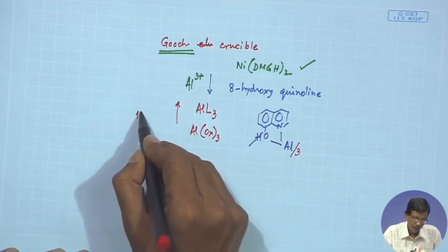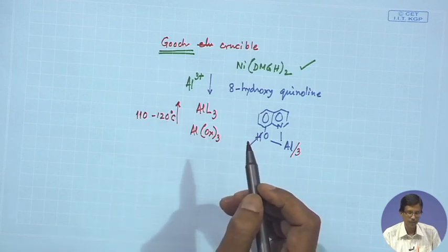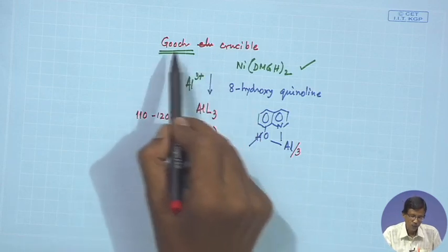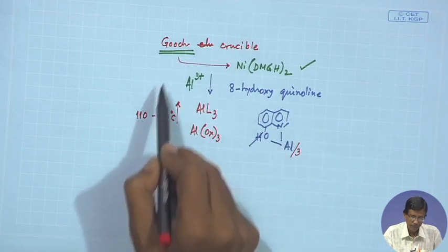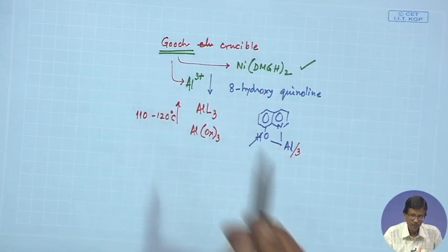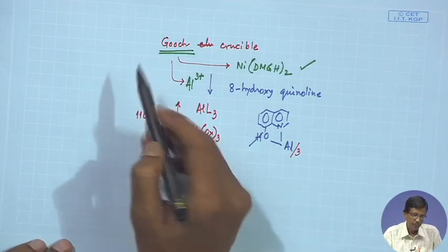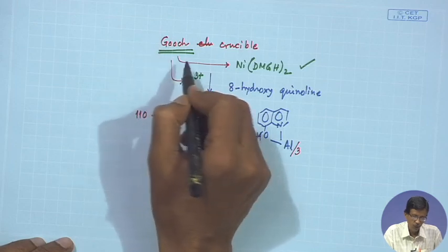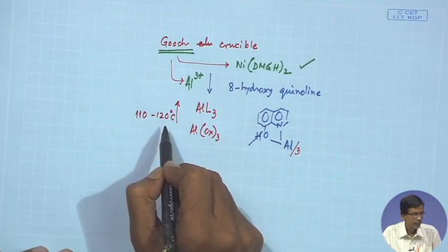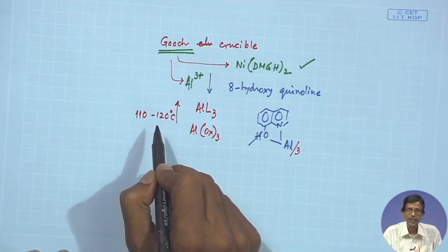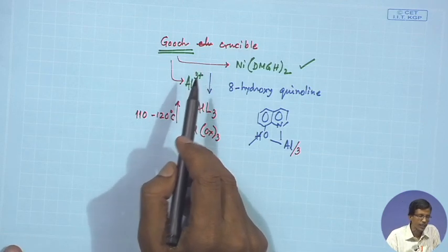Drying at 110–120°C is fine for aluminum oxinate. So we get two examples for use of the Gooch crucible in gravimetry: aluminum estimation and nickel estimation. This is the normal procedure because you are only drying at 110–120°C — this is not ignition gravimetry or use of the crucible for ignition purpose.